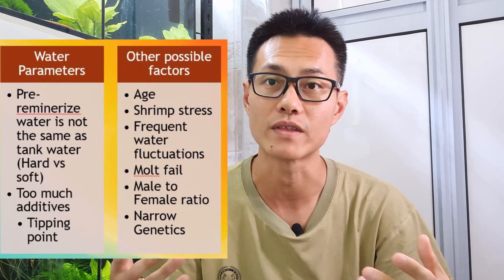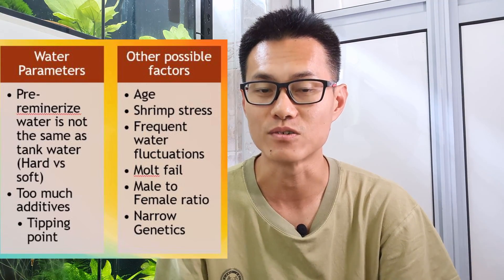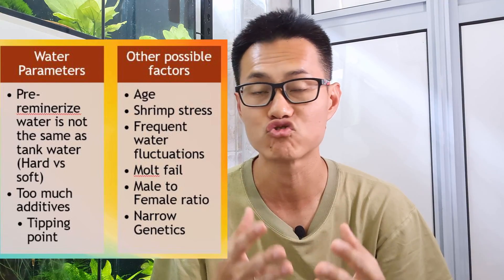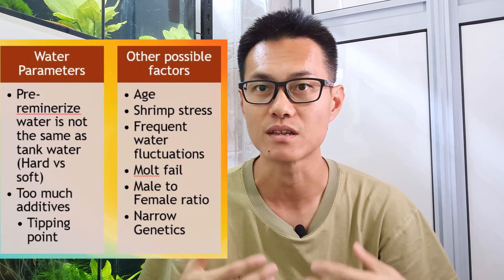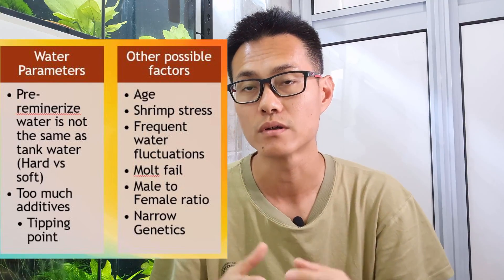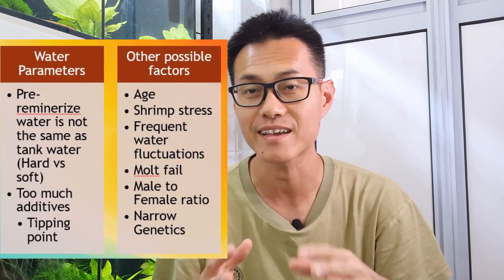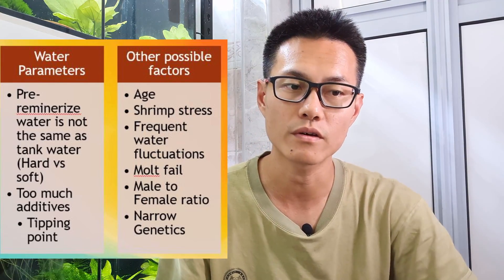From another perspective, what are some other possible factors that can cause shrimp to die after a water change? All living things die, so it could be due to age. It could also be due to accumulated shrimp stress — if your water parameters have not been ideal, stress builds up over a long period of time. Frequent water fluctuations are also a factor. We advocate weekly water changes of maybe 5, 10, or 20 percent, however if your bio load is not very high and your nitrate is at 5 to 10 ppm, there is really no reason to do a water change.